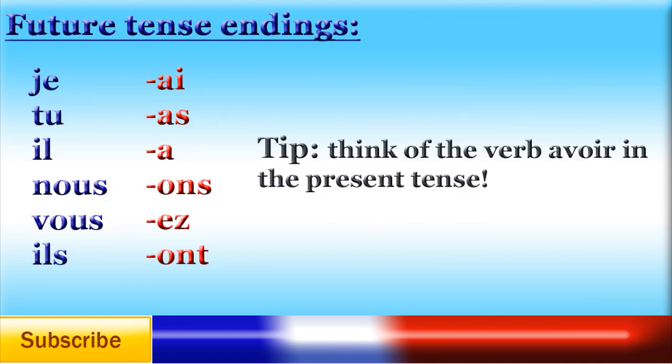The future tense endings are: ai, as, a, ons, ez, ont. If you're having problems remembering these, think of the verb avoir in the present tense.